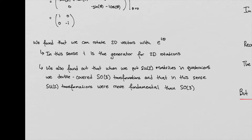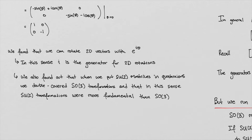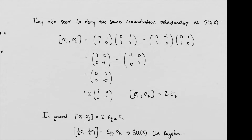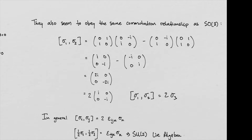So we found that we can rotate 2D vectors, and in this sense i is a generator for 2D rotations. But we also found that when we put SU2 matrices into quaternions, we double cover SO3 — so three transformations. That's something we talked about earlier. In this sense, the SU2 transformations were more fundamental than SO3 because the SU2 matrices double covered SO3. So let's take a look at how they also seem to obey the commutation relationship with SO3.